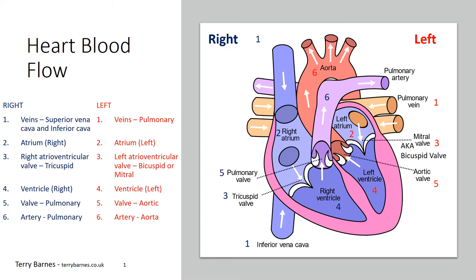There are 12 parts which make up the heart, and I've split the explanation into two halves — right and left. This makes things easier, and basically both sides have six similar parts. These parts are as follows: entry veins, a top heart chamber, then a separating atrioventricular valve, a bottom heart chamber, an exit valve, and then finally an exit artery. These six parts are mirrored on each side of the heart with slightly different names. Once you've learnt the flow of the right side, the left side has the same structure.